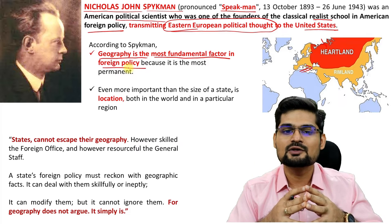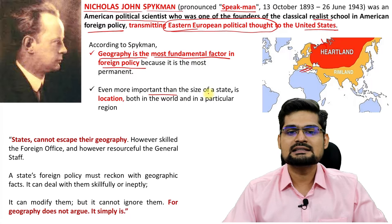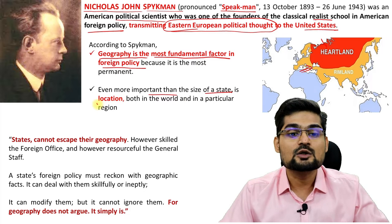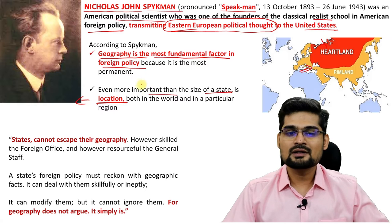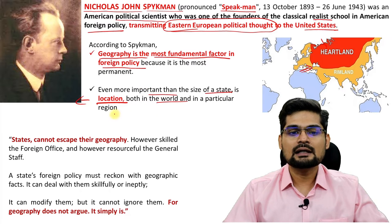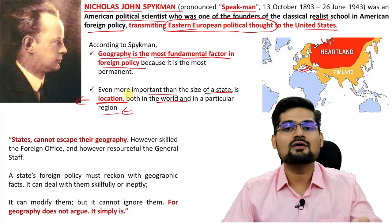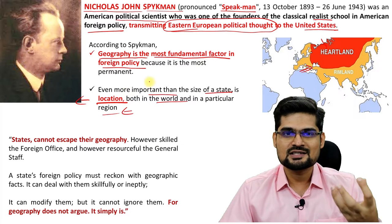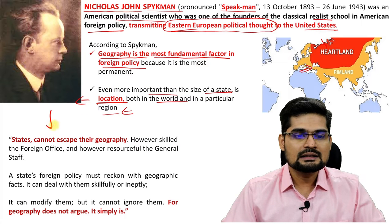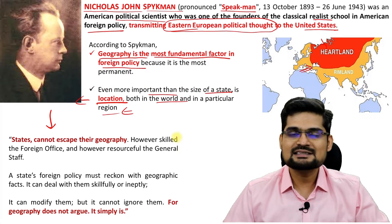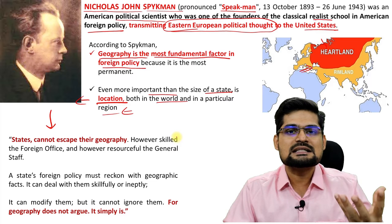This rimland theory is also dependent upon geographical factors and geographical location as the fundamental factor for any geostrategy and foreign policy. This is why it is important to understand the determinism here. Even more important than the size of a state is its location, according to Speakman. In both the world and in a particular region, location determines your power, your position, and your geostrategy is based on that.